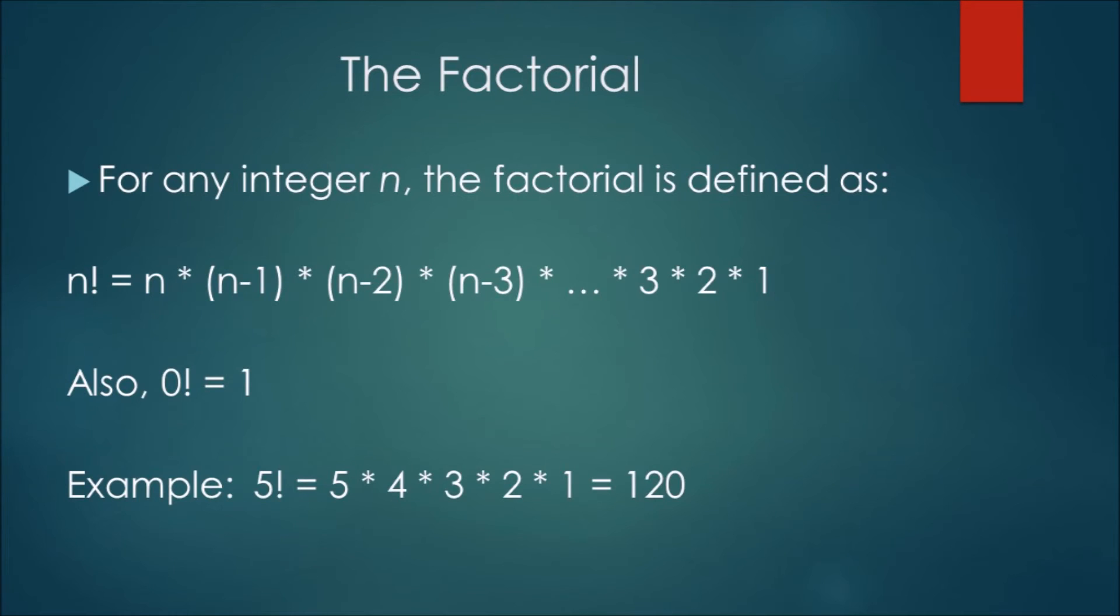Before we dive into the formulas, let's review what the factorial function is. For any integer n, n factorial is equal to n times n minus 1 times n minus 2 and so on times 3 times 2 times 1. If n is equal to 0, then 0 factorial is defined to be 1.